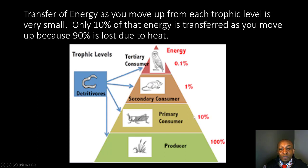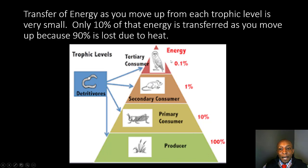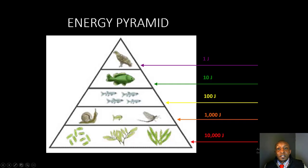The secondary consumer — this mouse that eats the grasshopper — only receives 1% of the energy, losing 90% due to heat from moving around. Then this owl, the tertiary consumer, only gets 0.1% of the energy after eating the mouse. As we go up trophic levels, the energy received decreases by 90% at each step, giving us 100%, 10%, 1%, and 0.1%.